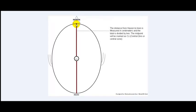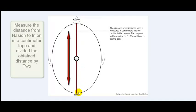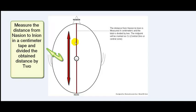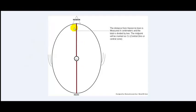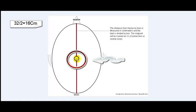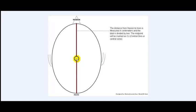Once we define these four locations — nasion, inion, right preauricular, and left preauricular — we can proceed to the next step of measurement. We will measure the distance from the nasion to the inion with a tape measure in centimeters and divide this distance by two. For example, if the distance from nasion to inion is 32 centimeters, dividing by two gives 16 centimeters. So 16 centimeters will be the point of CZ, or central zero zone. Now we can proceed to connect the remaining electrodes on the central area from nasion to inion.